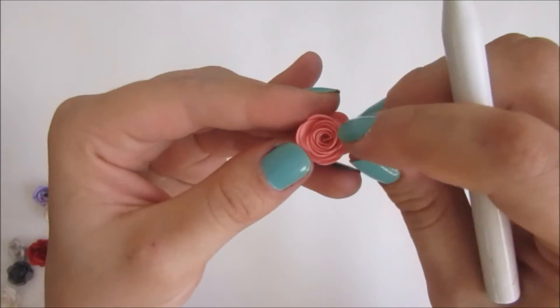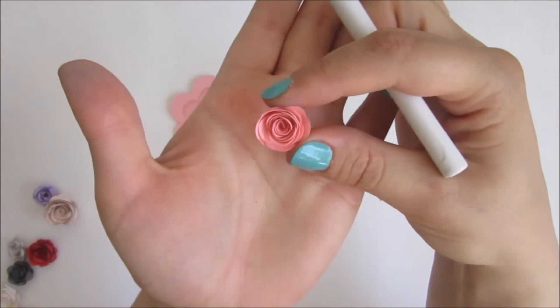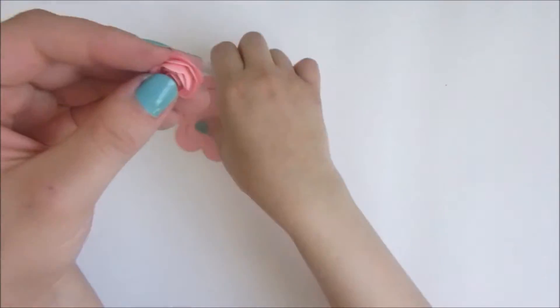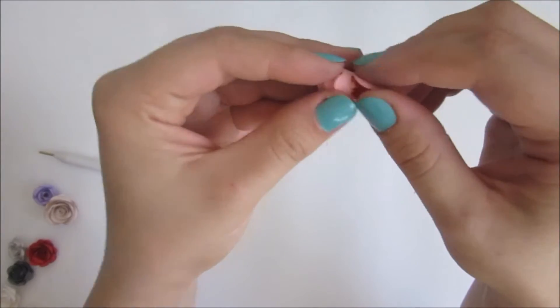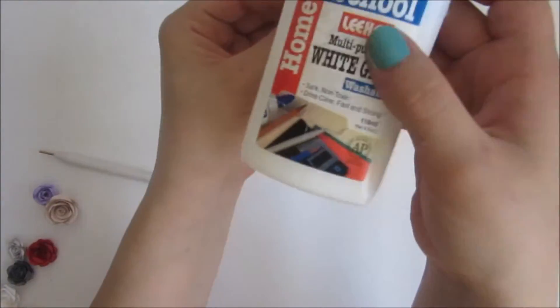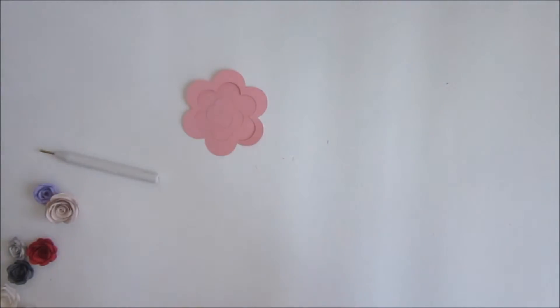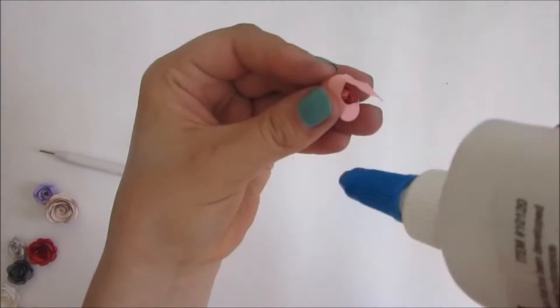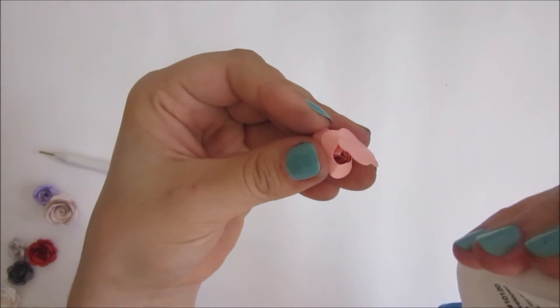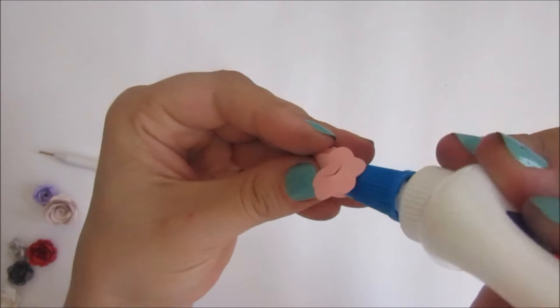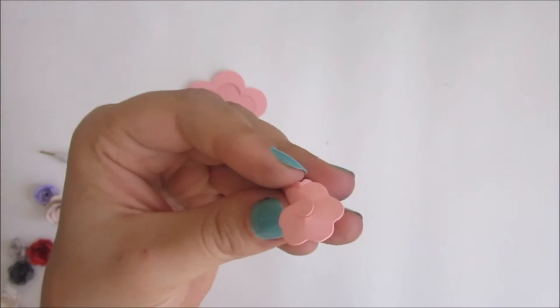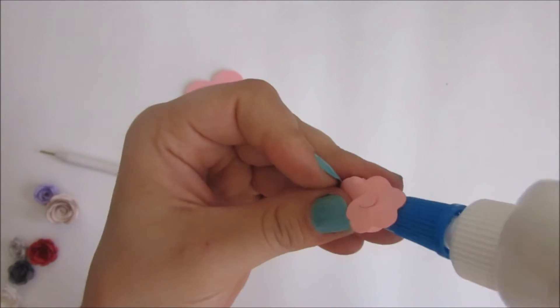When you finish rolling the flower, remove the stick to loosen it a little bit till you reach the shape you like. Then hold the adhesive glue and apply a little bit at the base while you are holding to stick all the layers together.